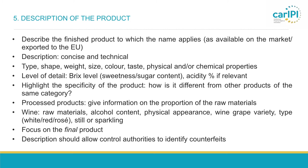The fifth heading of the summary specification is the description of the product. This is an important part of the specification. The application has to contain a description of the final product to which the name applies — the final product as it is available on the market and as it will also be exported to the EU market. This description has to be concise and as technical as possible, typically containing information on the type of the product and, depending on the type, also on the shape, weight, size, color, taste, and physical and/or chemical properties. For example, if you want to refer to sugar content or sweetness, it is preferable to indicate the Brix level. If relevant, you can also indicate the percentage of acidity.